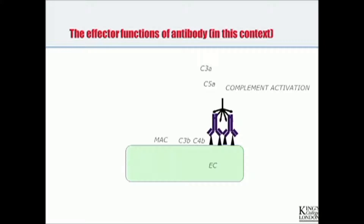When you fix complement, you get various different things produced. The end product is the membrane attack complex, which is a complex of C5b to C9. But you also get other molecules along the way — C3a, C5a, and anaphylatoxins — which can bind membrane-bound receptors and activate cells. Some of these can bind receptors on leukocytes. Other products, like C4D, we use clinically to indicate when an antibody has been bound.